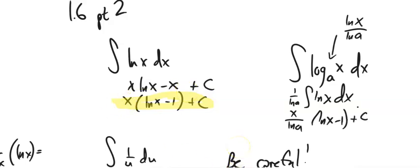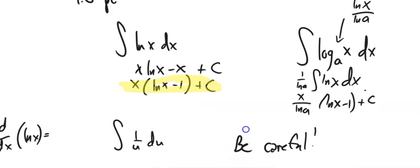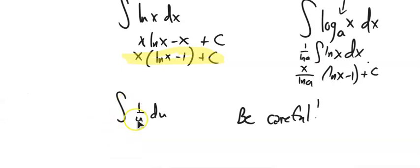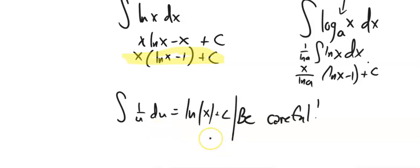I want to remind you that the integral of 1 over u is the natural log of u. Be careful — it's easy to get these mixed up. The derivative of ln goes one way, but when you're doing integrals, 1/u goes to ln(u).